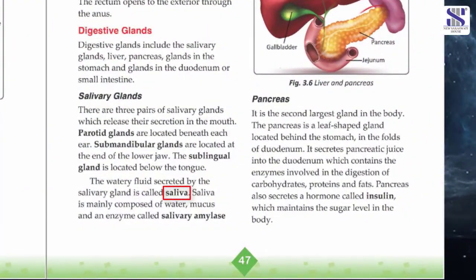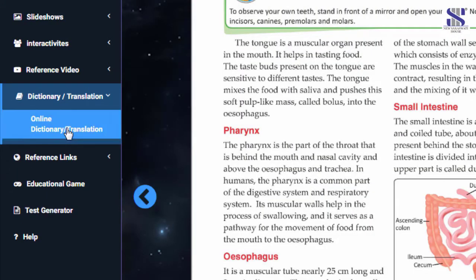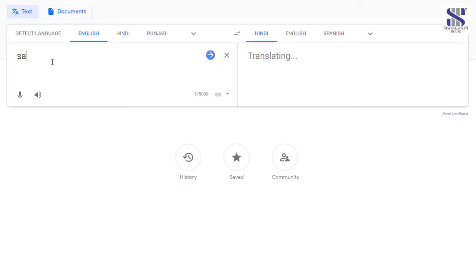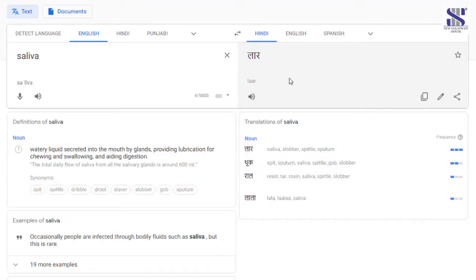Dictionary: To know the meanings of difficult words, click on the dictionary/translation button in the left panel. Type the word and it gives you the translation, meaning and usage in the desired language.